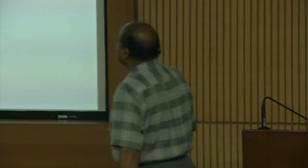That is the reason most electrical wire connections are metallic. Now 1897 was the time when J.J. Thomson discovered the electron, and 1900 was the year when Drude gave his theory for metals. It is very interesting that just three years after the electron's discovery, he could tell something which, while not 100% correct by today's standards, approached the problem reasonably correctly.